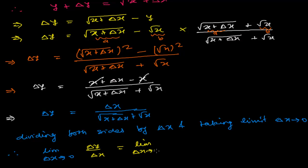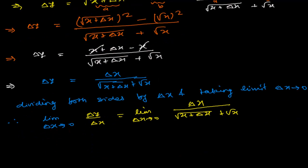Now it will be delta x divided by delta x times [root of x plus delta x plus root x]. Since we divided both sides by delta x, I need to divide this whole quantity by delta x.